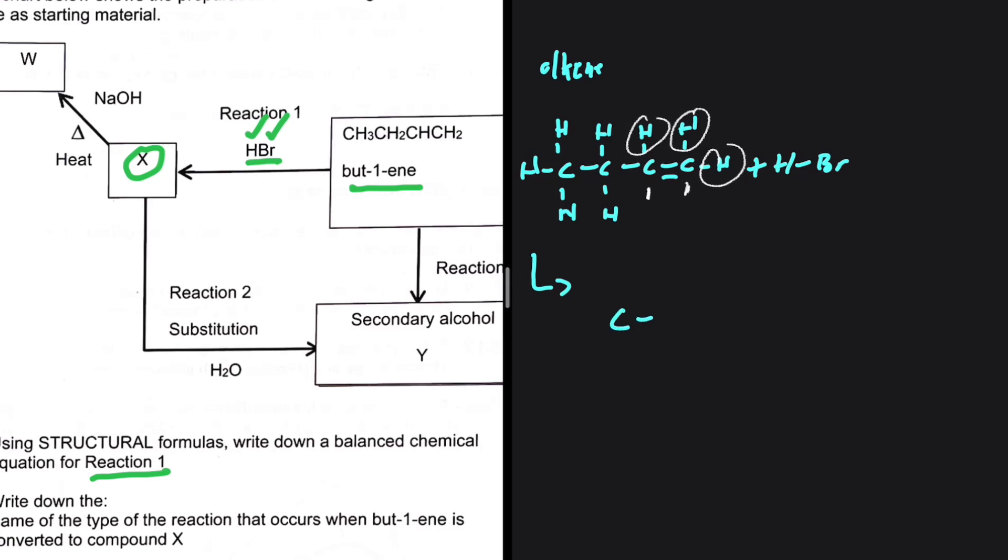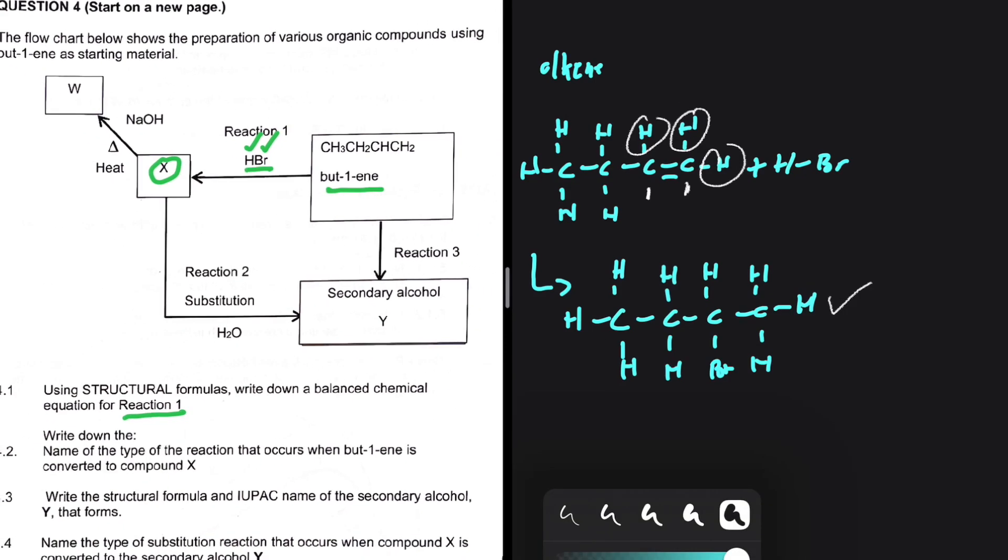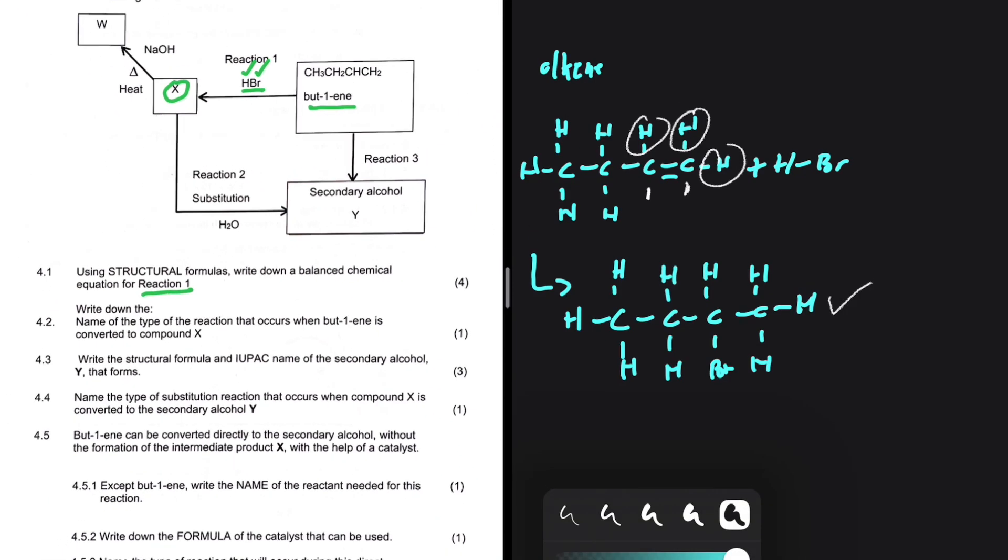So the hydrogen is going to go to the carbon with the most number of hydrogens. That is Markovnikov's law. Let's have our product now. Our hydrogen is going to go to the first carbon as it has the highest number of carbons compared to the other carbon. So from this reaction, this is our major product. Our minor product is when the halogen is on the first carbon.